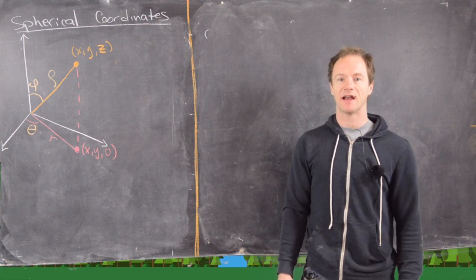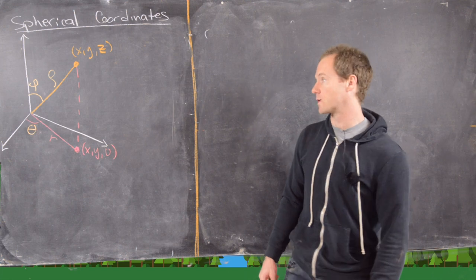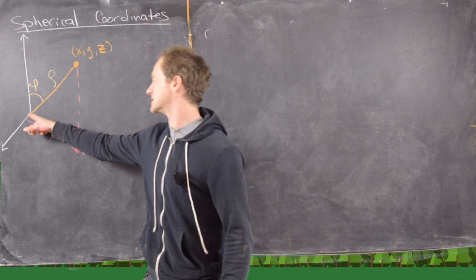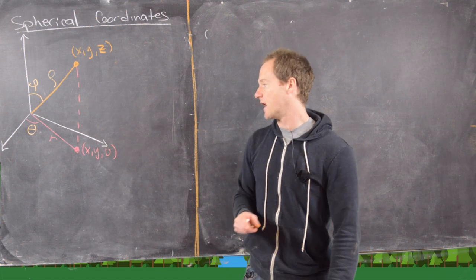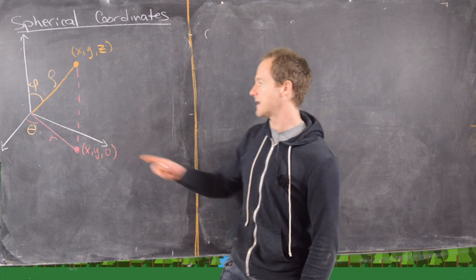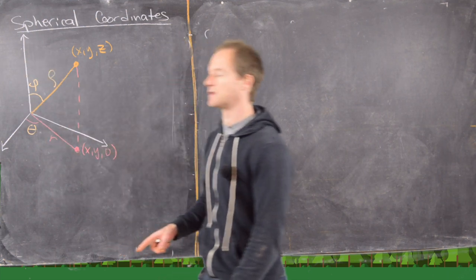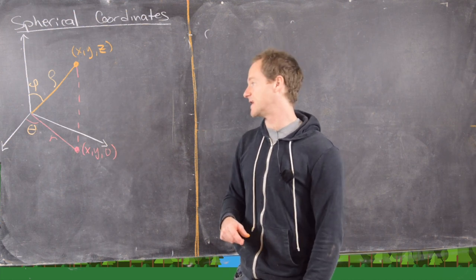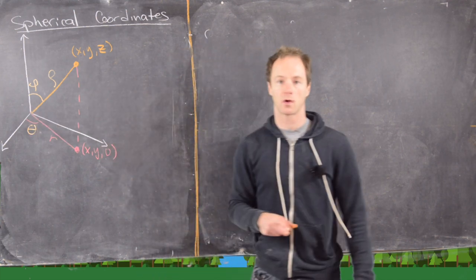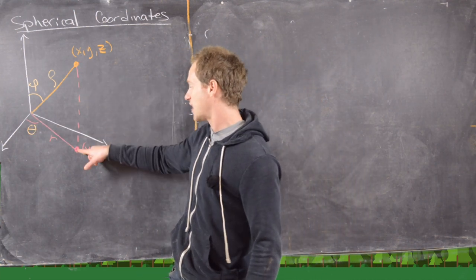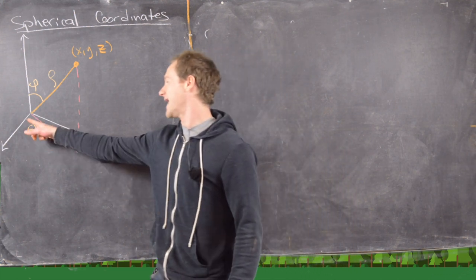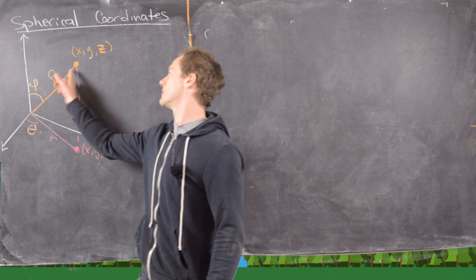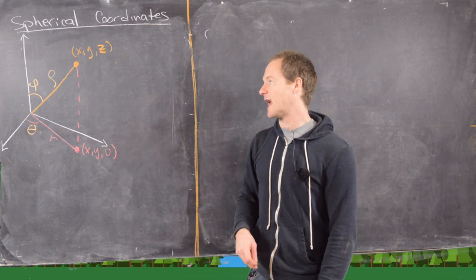So let's see how we can define a point in 3-space via spherical coordinates. We've got a point defined as (x, y, z) in rectangular coordinates — x units along the x-axis, y units along the y-axis, z units along the z-axis. Another way to describe it: it is ρ units from the origin, and if we project it down to the xy-plane, the angle it makes with the xy-plane is θ. And if we measure its angle from the positive z-axis, we get an angle of φ.